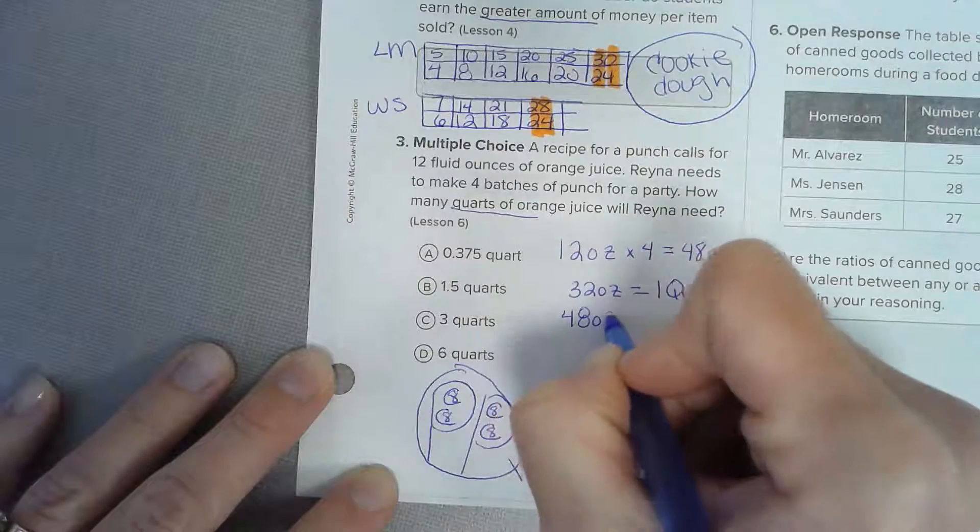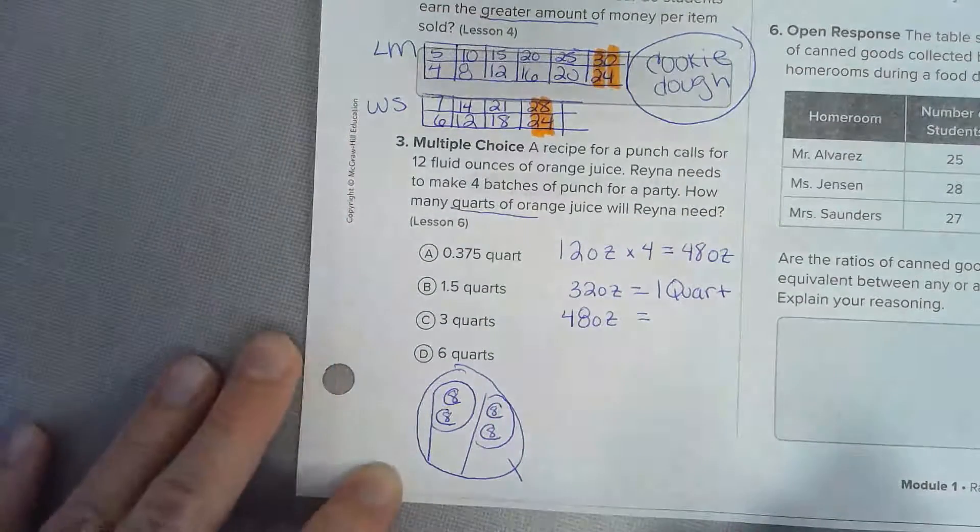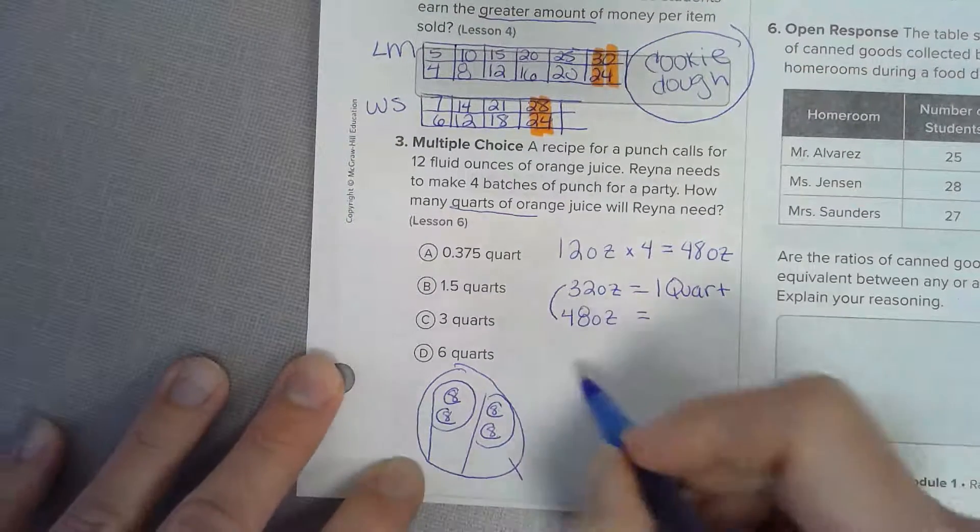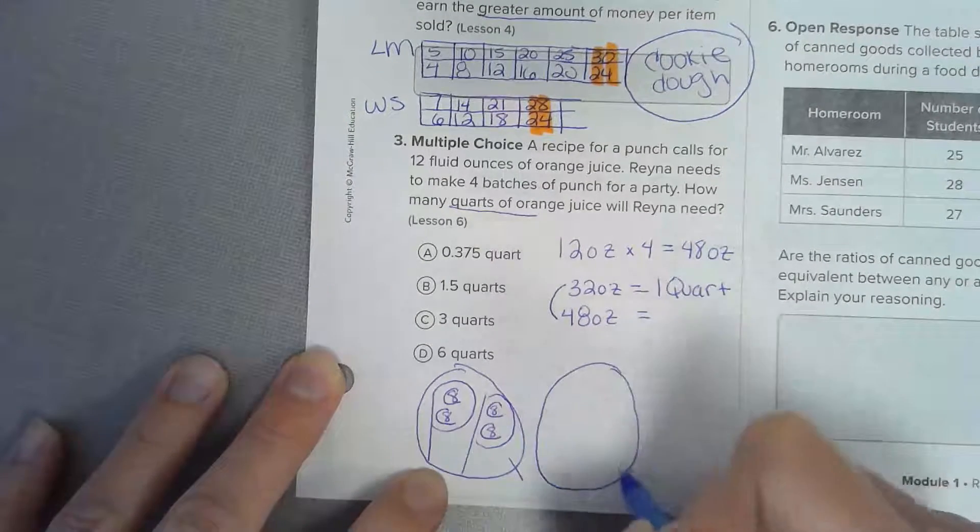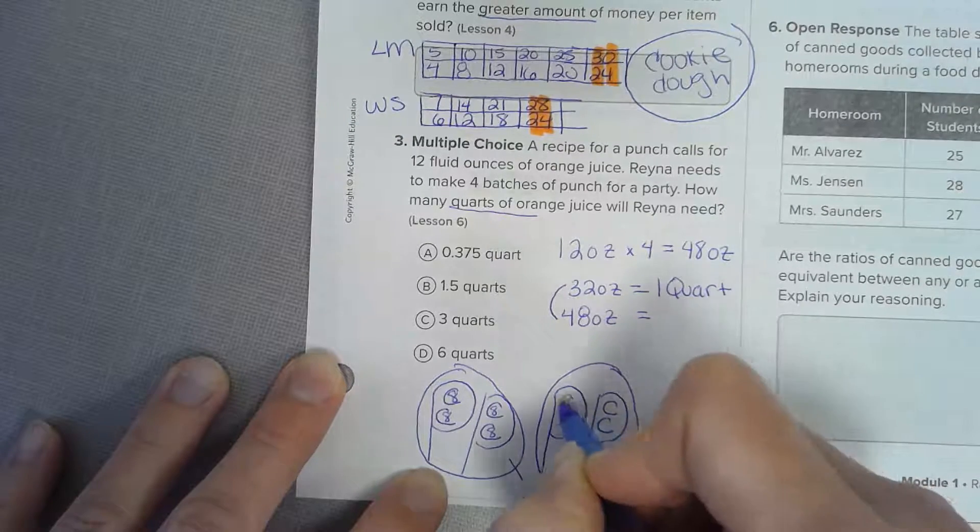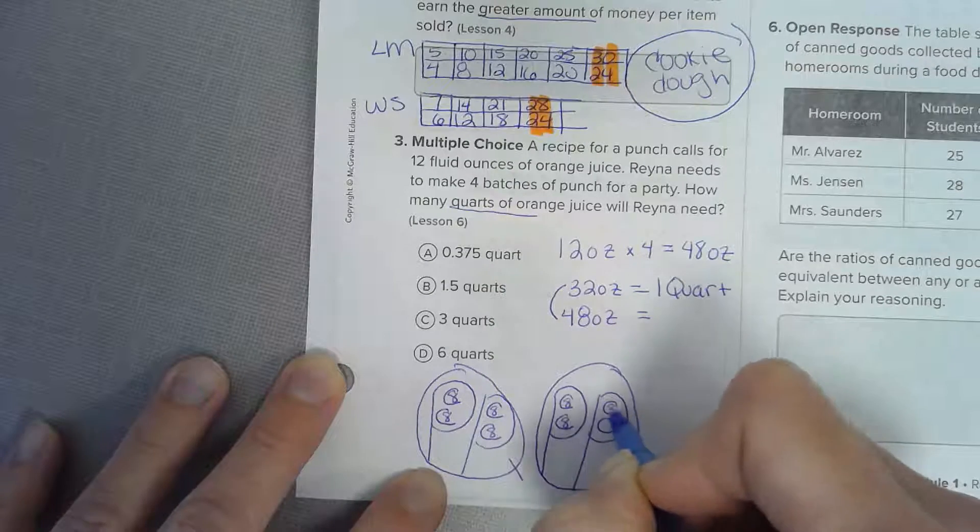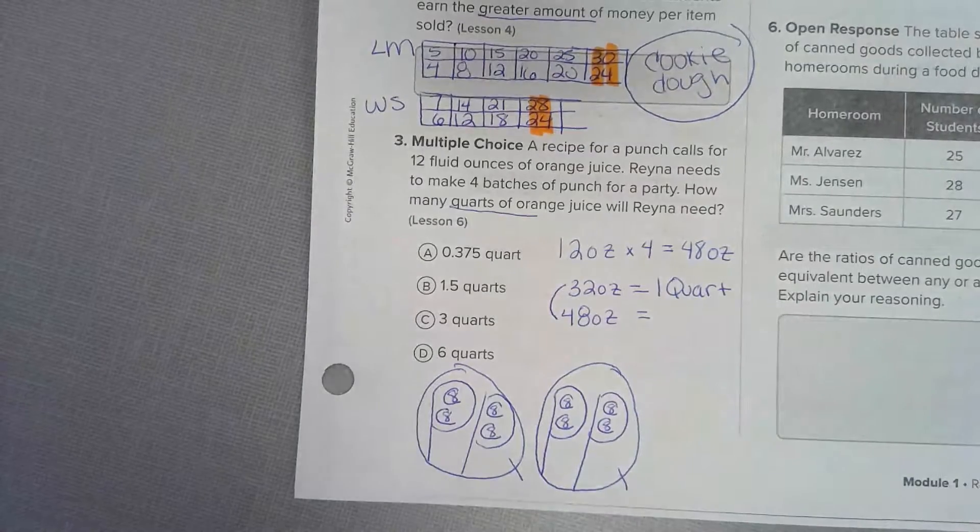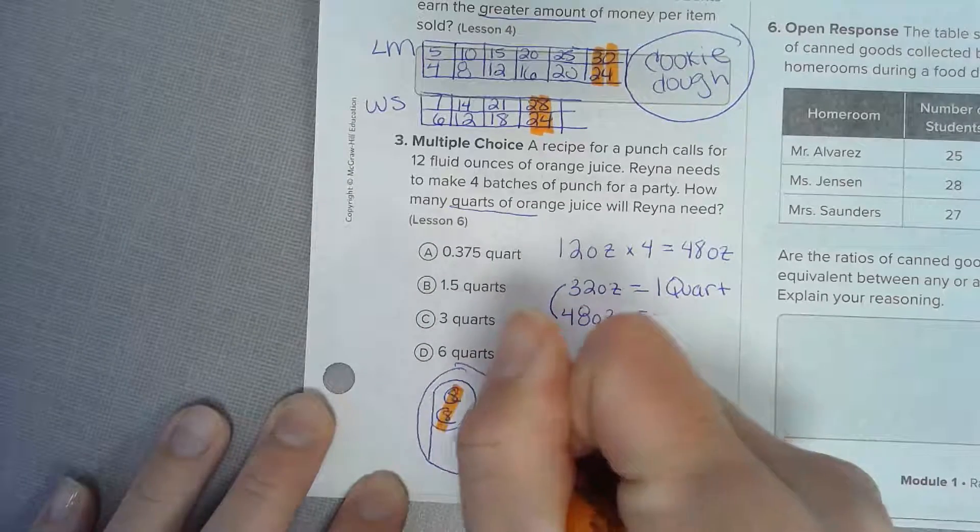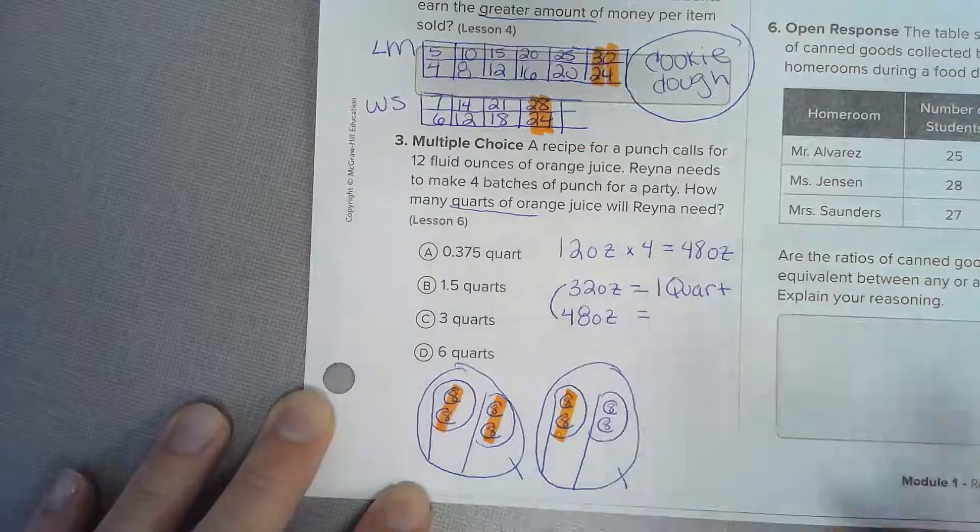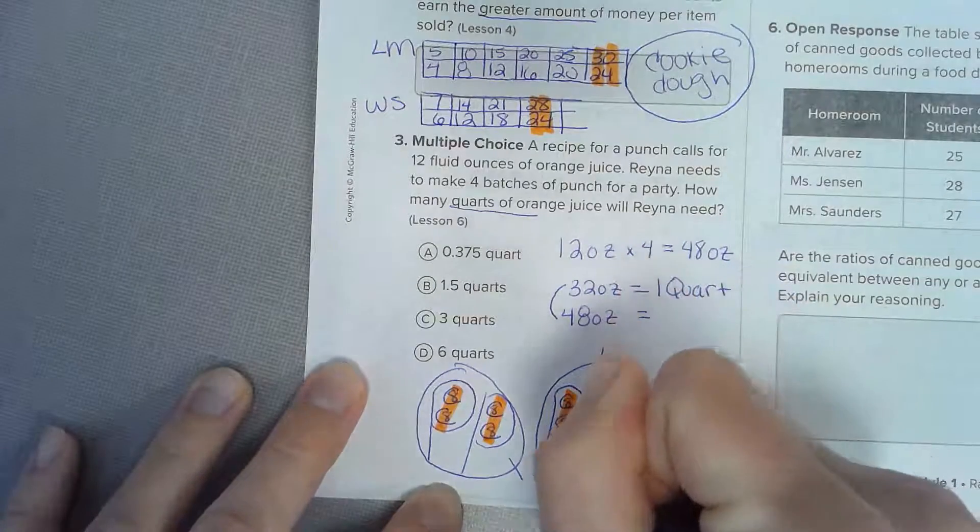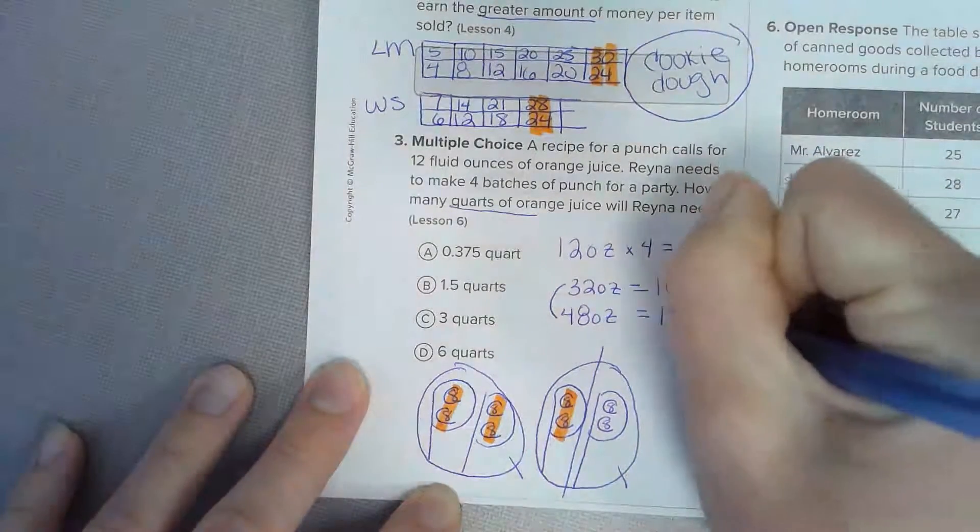We have forty eight ounces and we want to know how many quarts is that. I'm going to draw another quart, put my pints inside, my cups, and my ounces, and you can count until you get to forty eight. We know this is eight, sixteen, twenty four, thirty two, forty, forty eight. So that is one whole quart and then half of this one, so this is one and a half quarts.